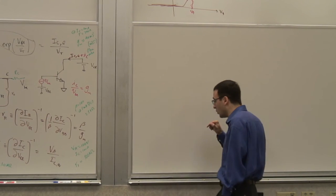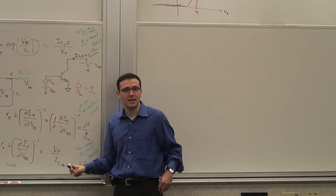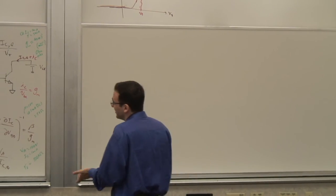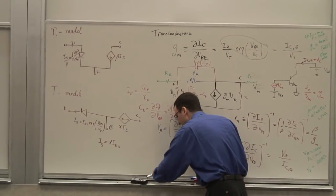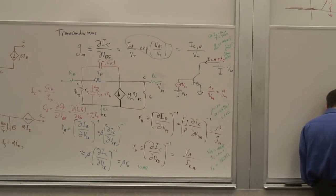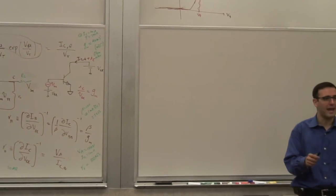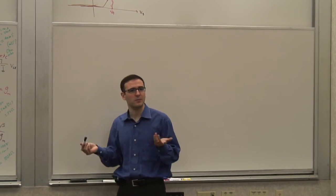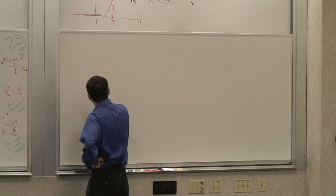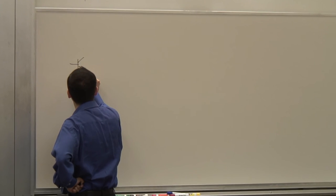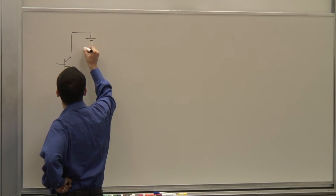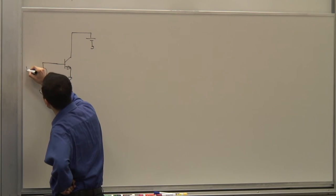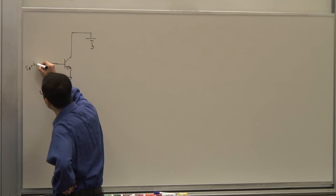There are different ways, depending on what you want to do with it. Let's say I want to use it as a current magnifier — I understand there's this beta multiplication of the current. So I want to say what the maximum useful frequency is. I'm talking about a case where I have a transistor biased at some right value, applying a current consisting of a fixed base bias current plus a perturbation ib.